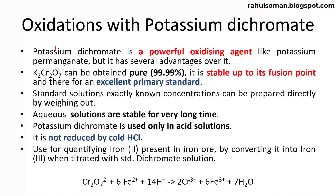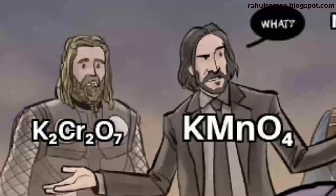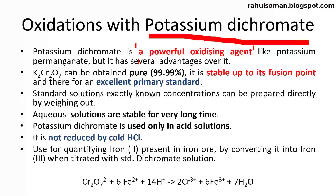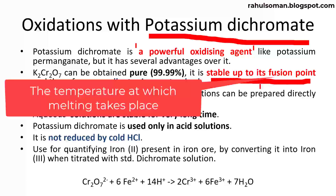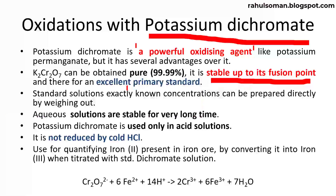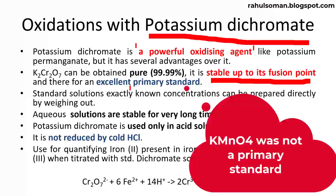Potassium dichromate is a very powerful oxidizing agent, similar to potassium permanganate. However, it has several advantages over potassium permanganate: it is available in its purest form — nearly 99.99% purity — and it is stable up to its fusion point. Therefore, this compound can be used as a primary standard and is considered an excellent primary standard in redox titrimetric analysis.